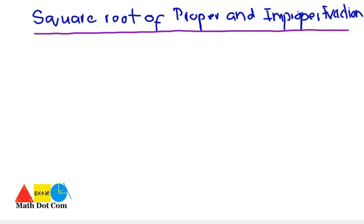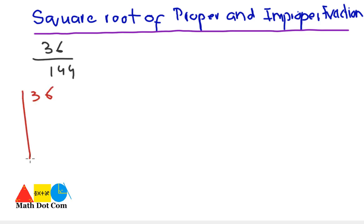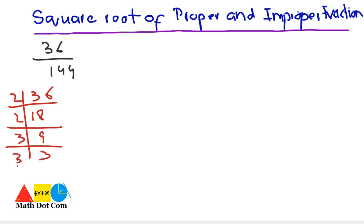Let's have an example. If you are asked to find the square root of 36 over 144, how will you do that? Step 1 is to find the prime factors of 36 and 144. For 36: 2 times 18, 2 times 9, 3 times 3, giving prime factors 2, 2, 3, 3.